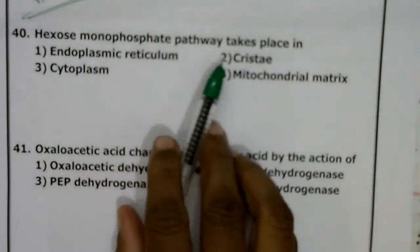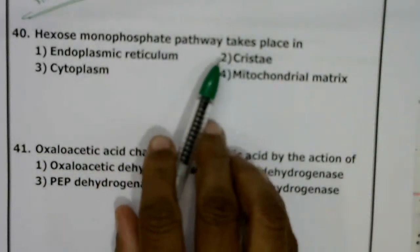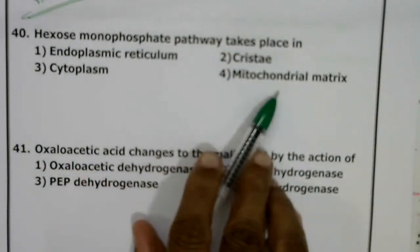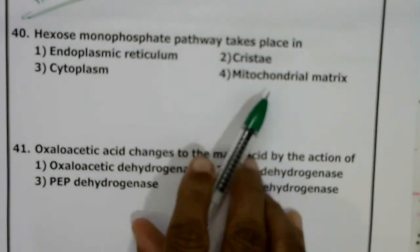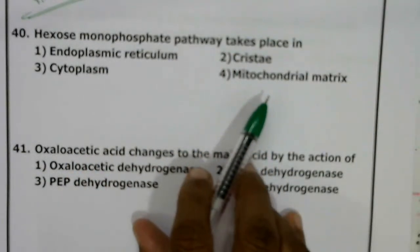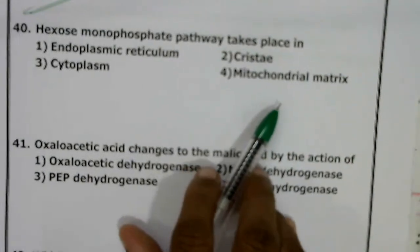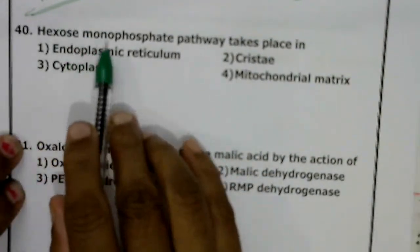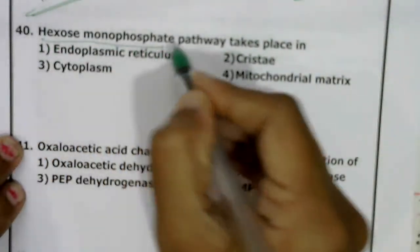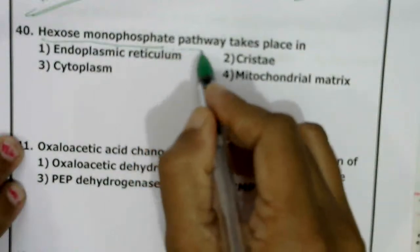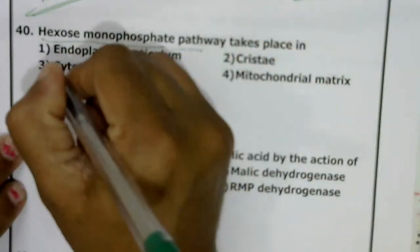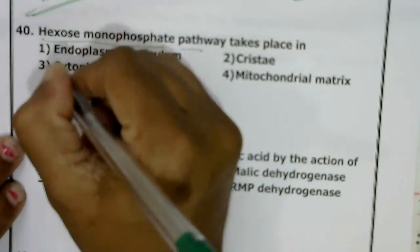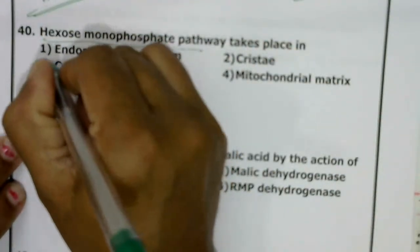Hexose monophosphate shunt takes place in endoplasmic reticulum, cristae, cytoplasm, or mitochondrial matrix? Hexose monophosphate shunt is related to respiration and mainly occurs inside the cytoplasm.